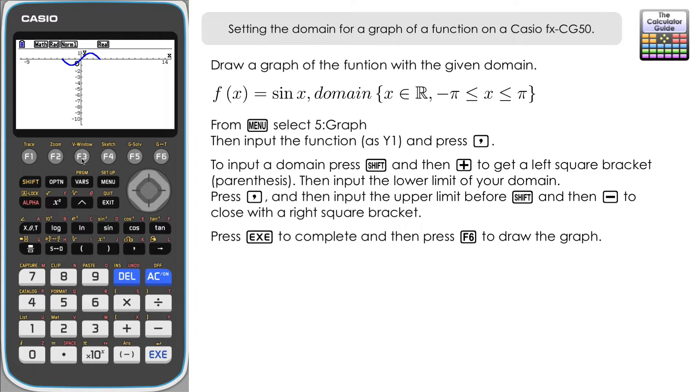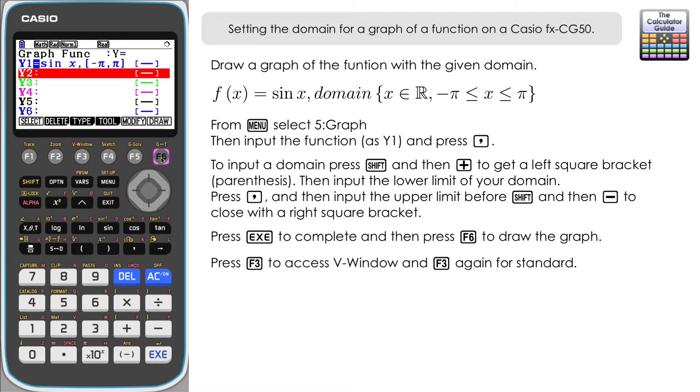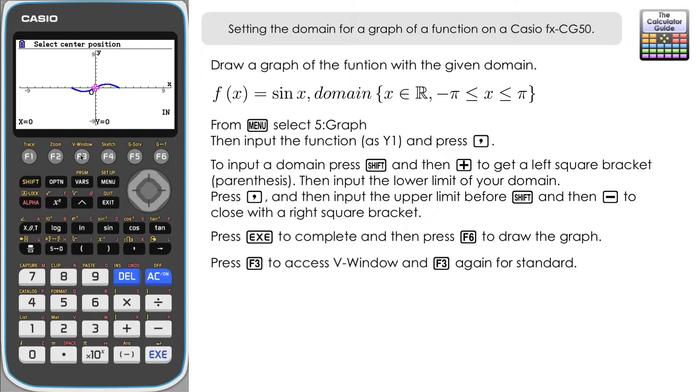Let's just alter the view of the axes there. F3 for V window and then I'm just going to set this to standard. That's F3 again. Execute and then execute again and we can see our graph for sine x drawn between those two limits that we had minus π and π.